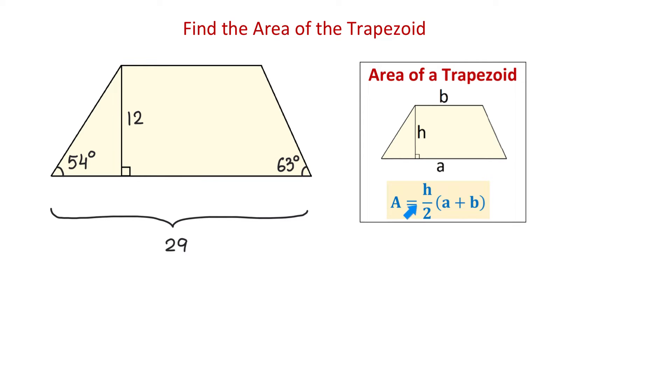A equals H divided by 2 multiplied by the sum of A and B. Now, in the given trapezoid, we have the lower base and the height, but we are not given the upper base. So, before we find the area, first we will need to find the upper base.